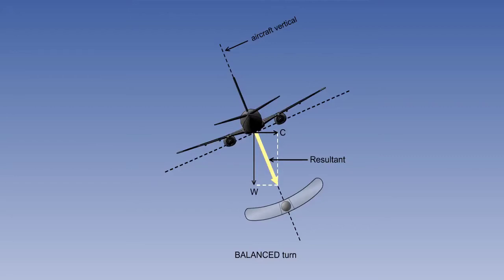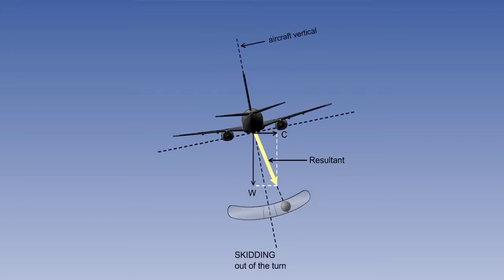Diagrammatically, this is illustrated here. This is a balanced turn, and in a balanced turn, the resultant of the force of gravity and centrifugal force will lie in the aircraft vertical plane, and the ball will remain centralised in the tube. However, let's look at a situation now where a turn has been initiated but the angle of bank applied is insufficient for the rate of turn. The turn will be unbalanced and the ball will be displaced away from the aircraft vertical towards the outside of the turn.